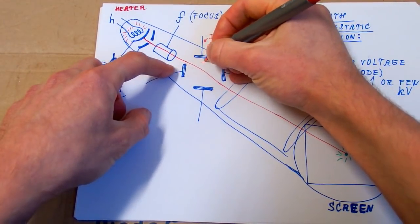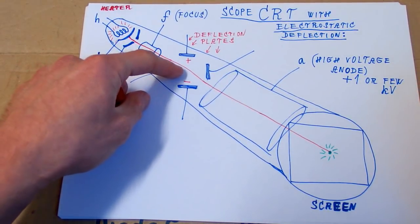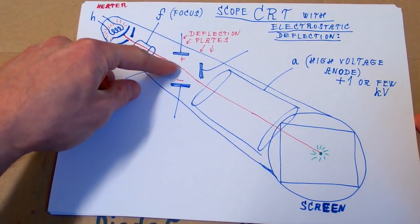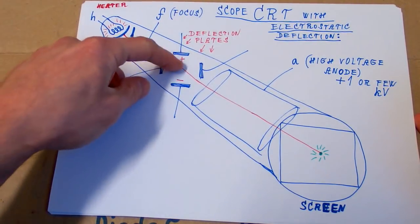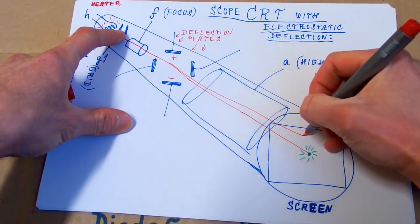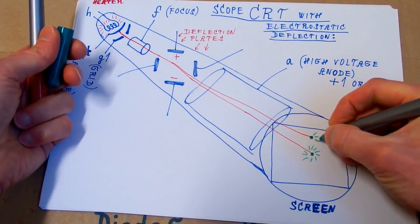So if you connect a positive here and a negative here, it will deflect the beam up because the electrons are attracted to the positive. So now the beam is deflected up and the point will appear here.